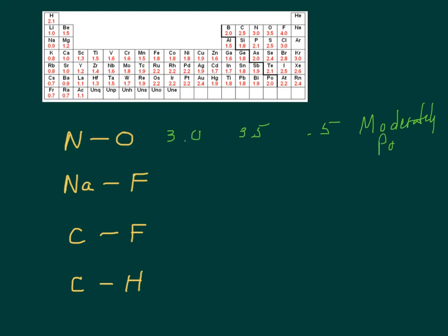Na is 0.9, and fluorine is 4. The difference there is 3.1. That's a very large difference. That's actually an ionic bond, which isn't surprising because this is a metal and this is a nonmetal, so it's probably bound to be ionic.